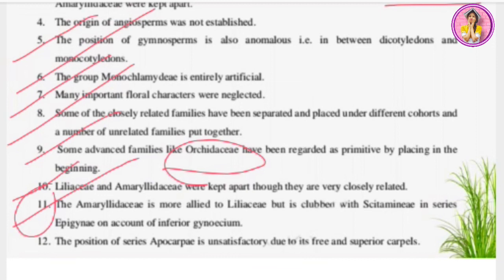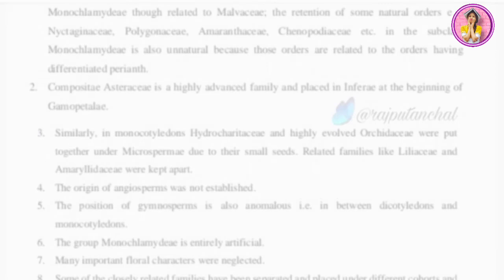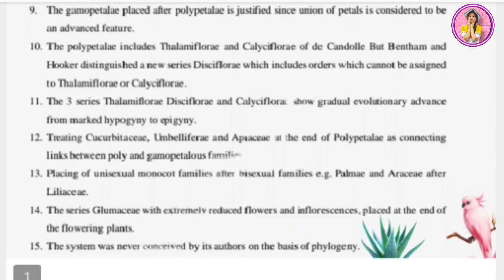Demerit twelve and the last: the series Apocarpae did not give a satisfactory position because it contains both free and free-and-superior carpels, so it should belong to a different group. So there are many mistakes in this classification, but it is still a very good classification because it is very helpful for graduate and undergraduate students when studying families.